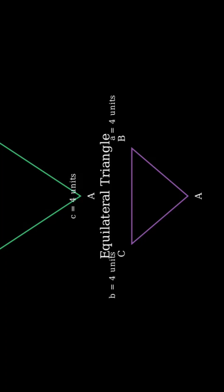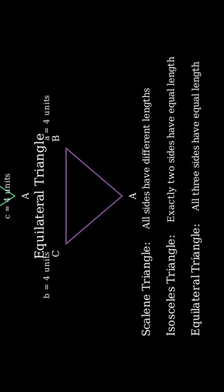In summary, Scalene Triangles have all sides different. Isosceles Triangles have exactly two sides equal. Equilateral Triangles have all three sides equal. Therefore, the correct answer is Equilateral.